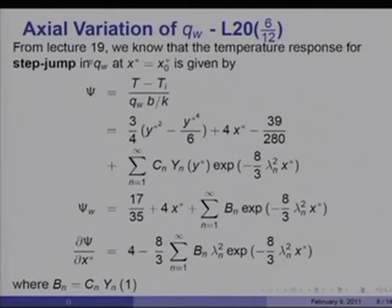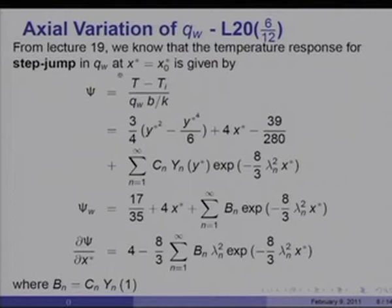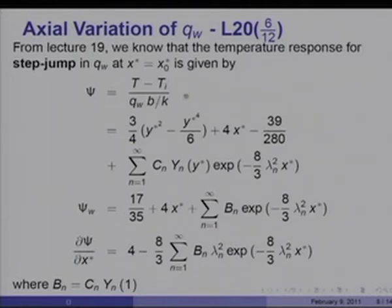Now let us consider the case of axial variation of heat flux. This is of considerable interest in nuclear reactors. From lecture 19, we know that the temperature response for a step jump in Q_wall at x* equal to x_naught* is given by T minus T_i over (Q_wall B/k). This is the fully developed solution plus the developing part of the solution, where ψ equals ψ_fd plus ψ_developing.